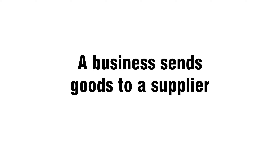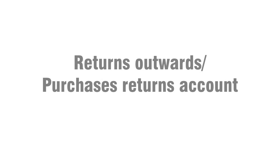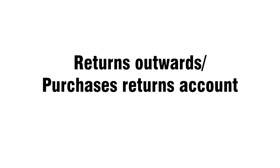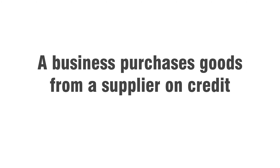Activity eleven: a business sends goods to a supplier. Returns outwards, purchases returns account. Activity twelve: a business purchases goods from a supplier on credit. Creditor account.